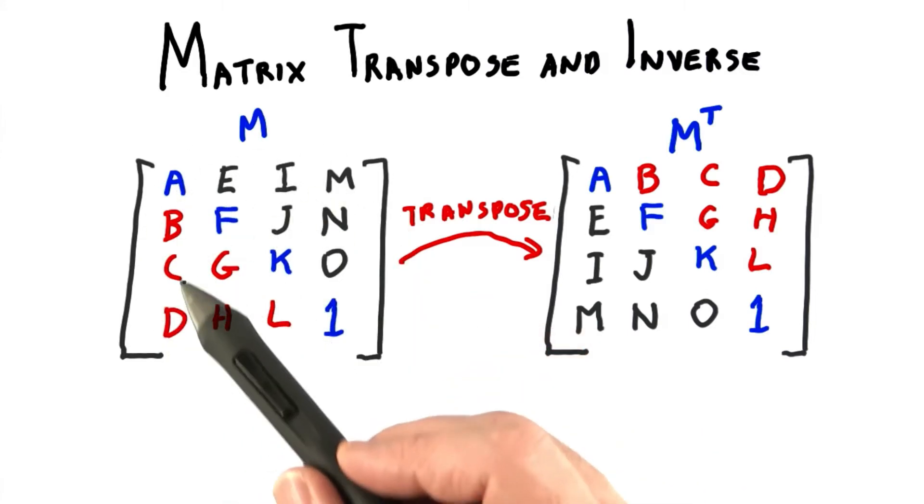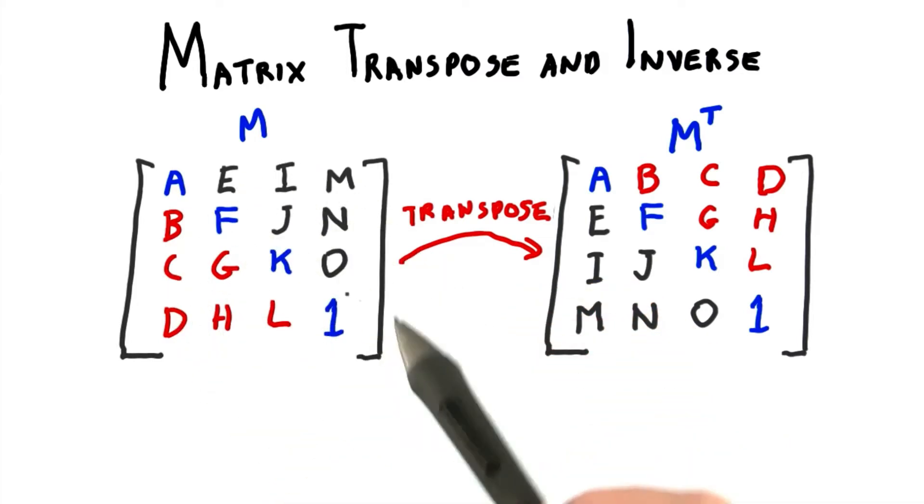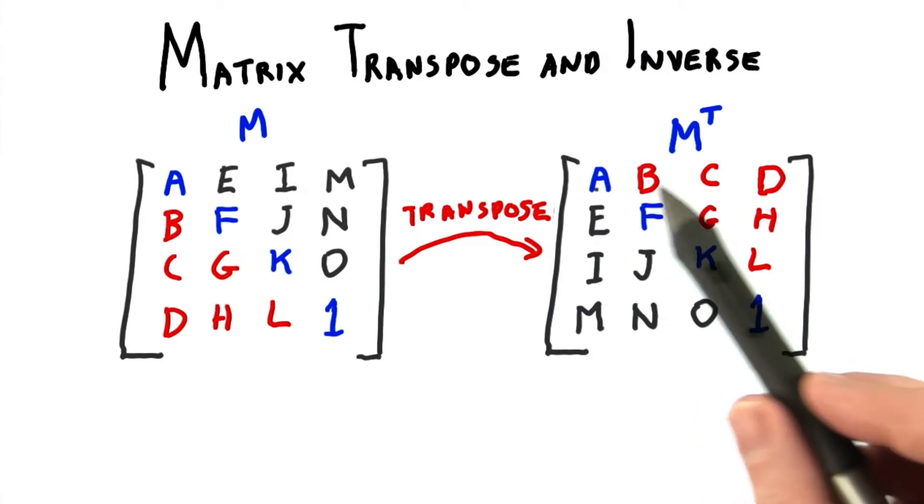Here I'm showing the original matrix, A, B, C, D, and so on, with column order. What we do to transpose is we flip along the diagonal, and they're now in this order.